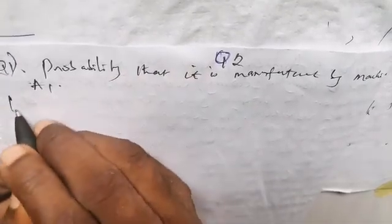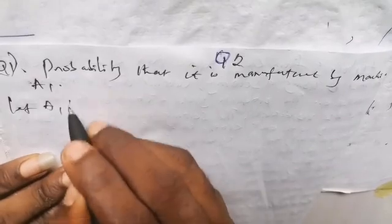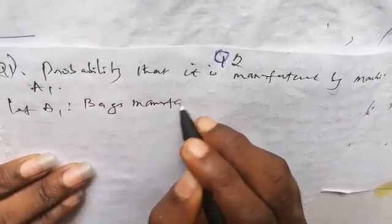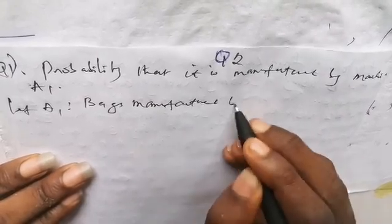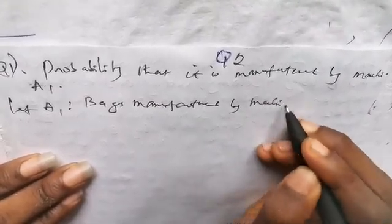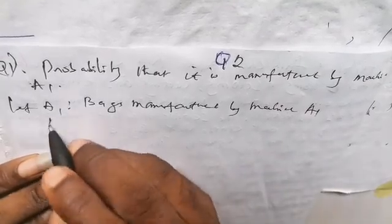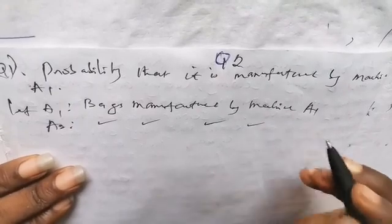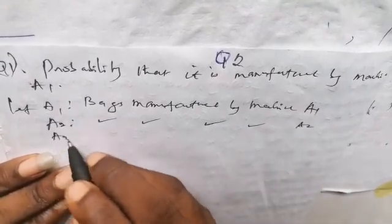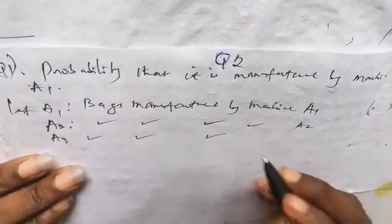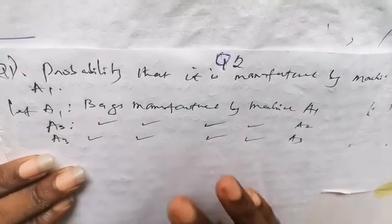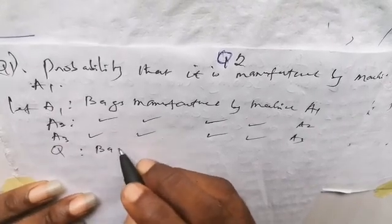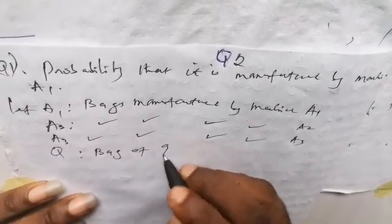Let A1 be bags manufactured by machine A1, A2 be bags manufactured by machine A2, and A3 be bags manufactured by machine A3. And let Q represent the bag of quality feed.